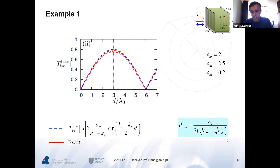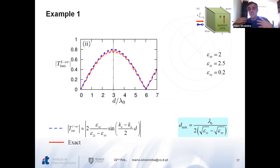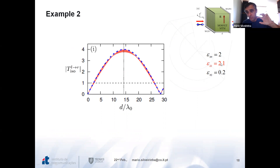This optimal thickness is related to the difference between the propagation constants of the ordinary and extraordinary waves. This is the exact solution taking into account multiple reflections, along with an approximate formula we derived. In the second example, to increase the effect, we make epsilon-XX and epsilon-ZZ more similar — from 2.5 down to 2.1. Because of this, the non-reciprocity and non-Hermitian effects are stronger, and indeed the transmission level increases. But something surprising: the transmission level is above 1, indicating optical gain in this system.